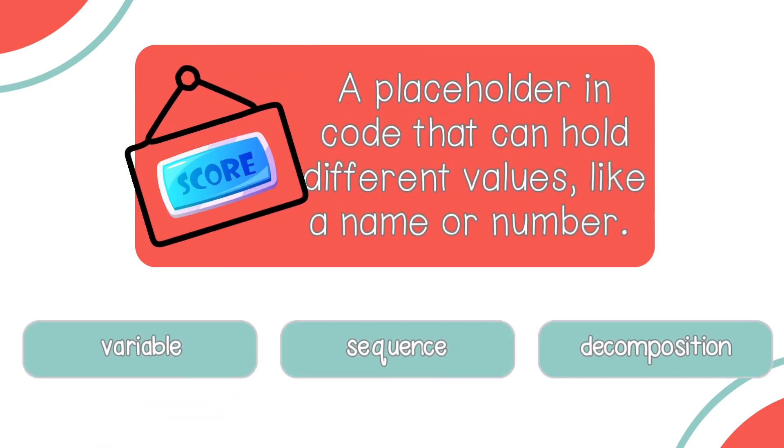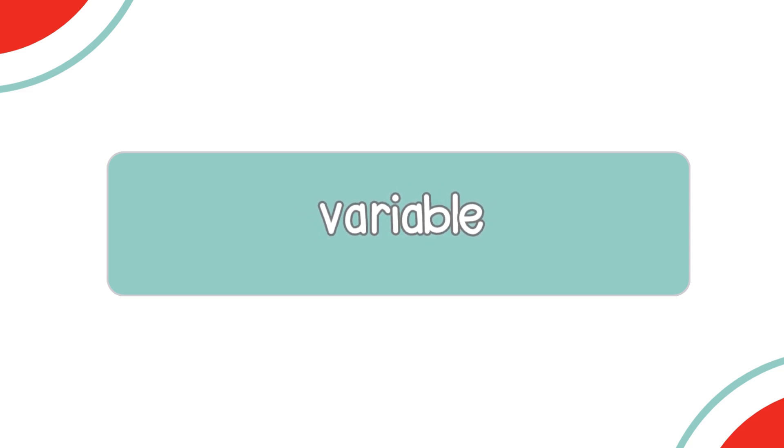A placeholder in code that can hold different values like a name or number. Is that variable, sequence, or decomposition? The answer is variable.